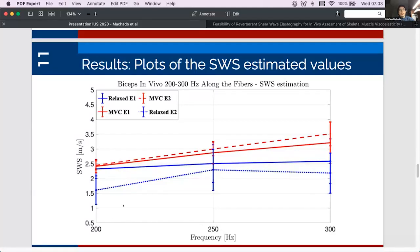And as you can appreciate in these plots there's a noticeable difference between the two states and there's also a noticeable increase of the shear wave speed values as the vibration frequency increases as it is to be expected for a viscoelastic material such as skeletal muscle.